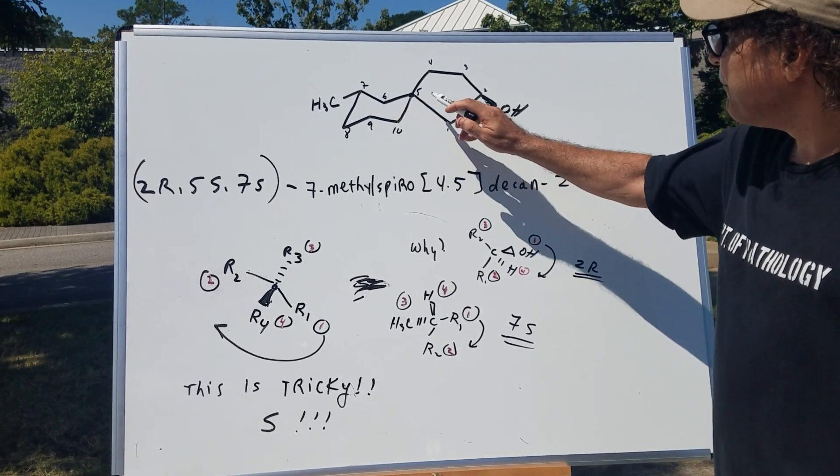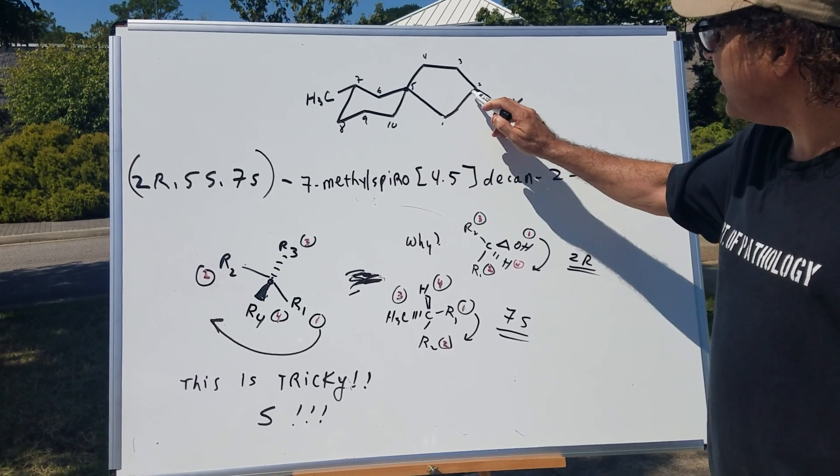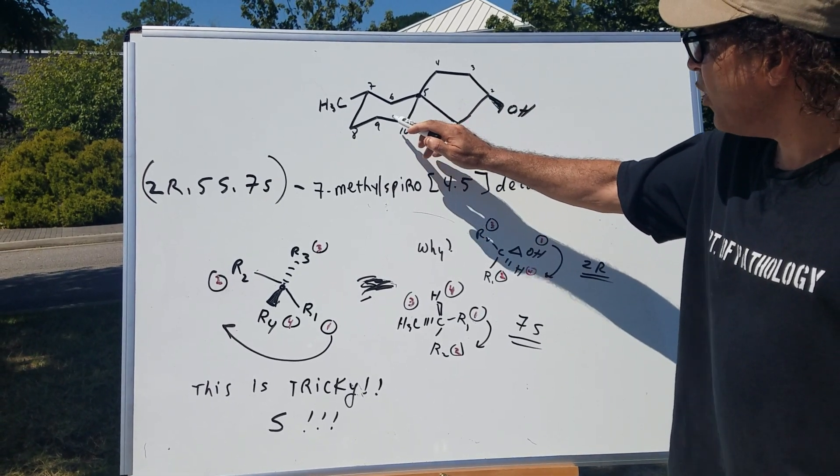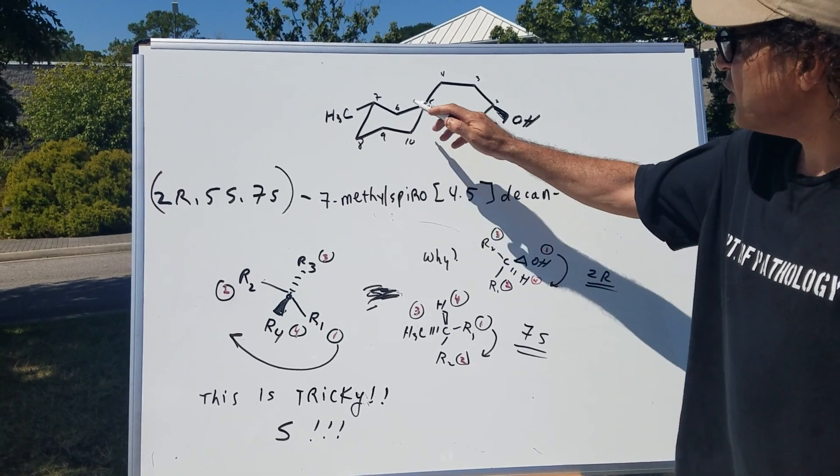But if you looked here, you have 1, 2, 3, 4, and if you go this way, 1, 2, 3, 4, 5. So there's two rings.